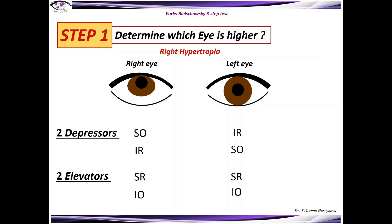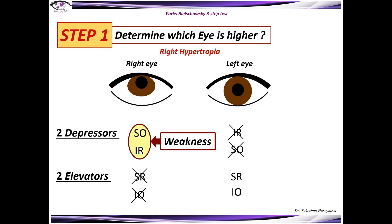Step 1: Determine which eye is higher in primary position. As we can see here, we have a right hypertropia. Step 1 narrows the number of possible underacting muscles from 8 to 4. In this case, we automatically exclude the inferior rectus and superior oblique of the left eye, as well as the superior rectus and inferior oblique of the right eye. This means we have a possible weakness of the superior oblique and inferior rectus of the right eye, or a possible weakness of the superior rectus and inferior oblique of the left eye.